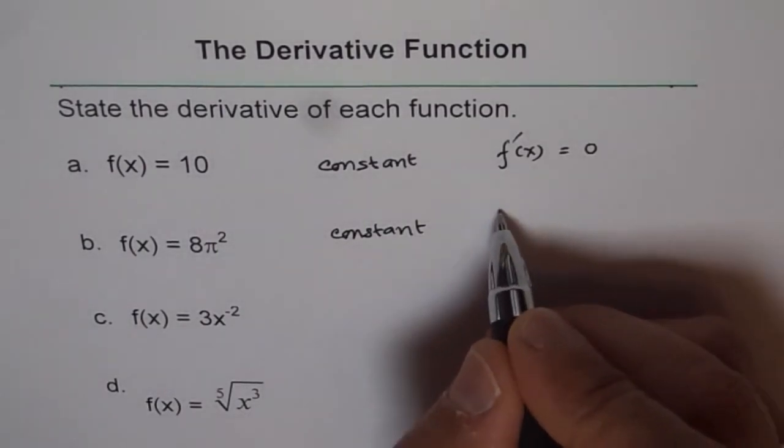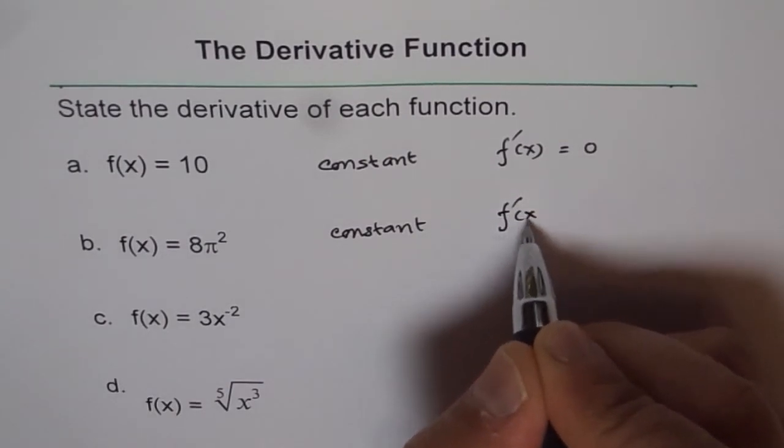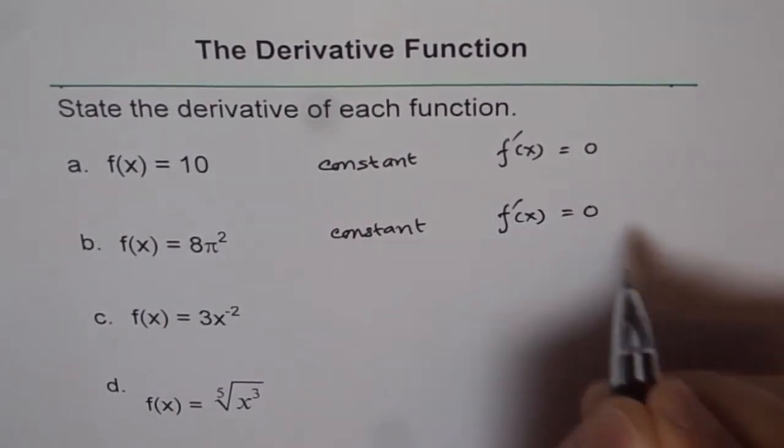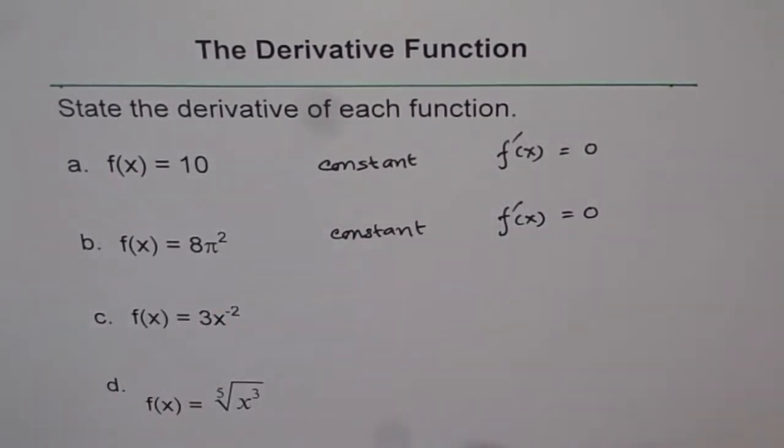Y value remains same. So here also f prime of x is 0. So the derivative of this function is 0 at any given point.